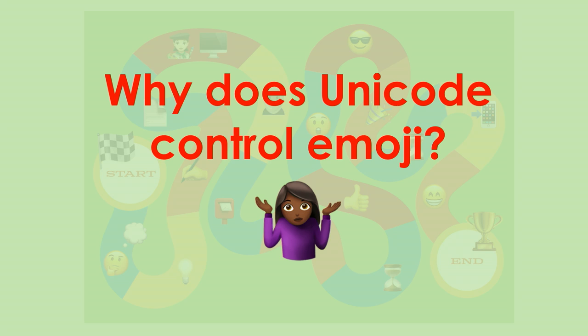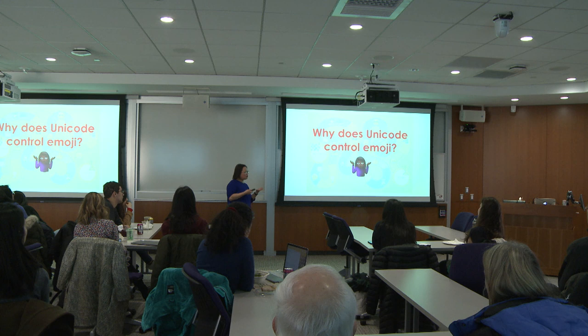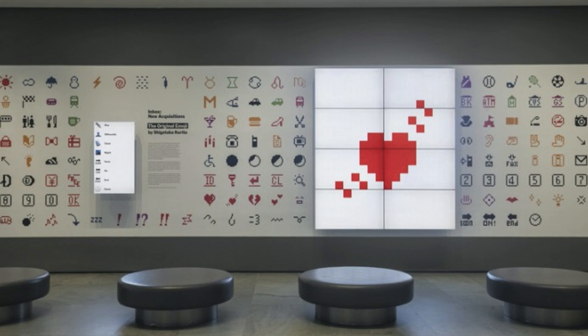So why does Unicode — this consortium cabal thing — control emoji? Part of it is a natural accident of what Unicode does. To give some history: there are debates about when emoji started, but essentially it started in Japan sometime in the late 1990s. There's a Softbank collection, a DoCoMo collection. One famous set was introduced in 1999, probably created in '97, and was so famous that the Museum of Modern Art collected those emoji as part of their permanent collection.